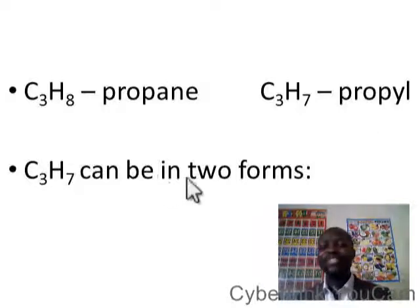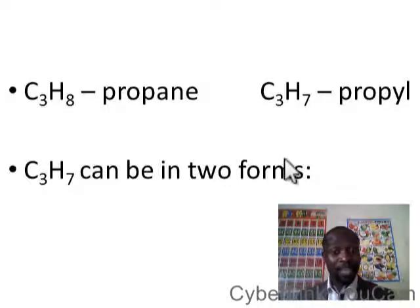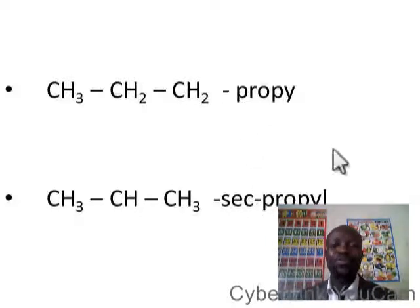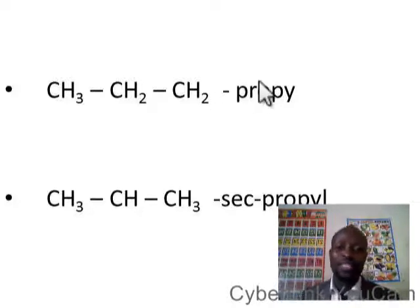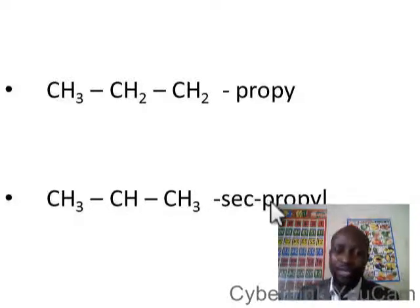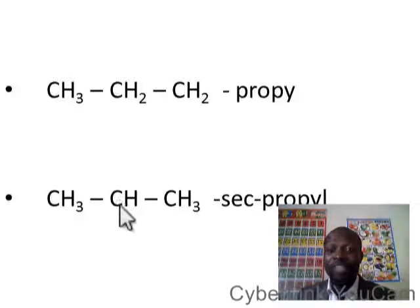Propyl can be written in two forms. Number one is normal propyl, and number two is sec-propyl. Normal propyl contains the correct number of carbons and still needs to be joined to something at the end. For sec-propyl, the two ends are filled up, so the joining point is in the middle. If what you are joining is in the middle, you call it sec-propyl. Any parent chain that comes must join to this middle carbon, and that is why we call it sec-propyl.